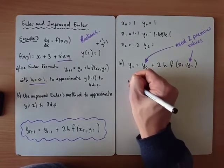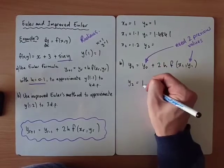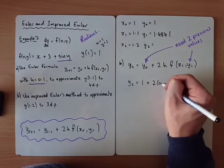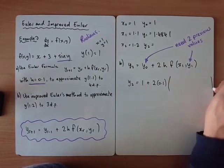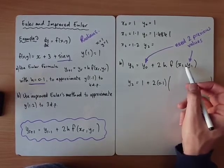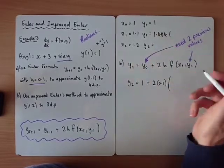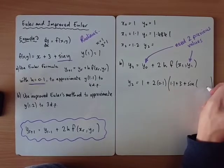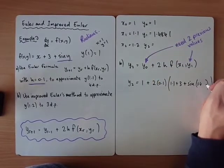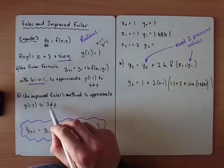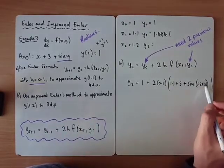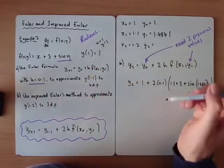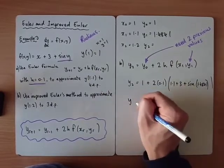OK, so let's sub in and see what we get. y0 is 1. Two lots of h, which is 0.1. Open up a big bracket. Now we're going to evaluate the function of x1 and y1. OK, so don't forget x1 and y1 of these. So it would be 1.1 plus 3 plus sine of 1.4841. And obviously we don't need to be accurate to three decimal places, so we need to make sure we use at least four decimal places here, which is the way the question settles. As you go on, you lose accuracy in each step.